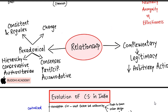Cabinet secretary को father of all IAS officers in the country कहते हैं, chief secretary father of all IAS officers in the state। यह hierarchy showcase करती है कि civil services को hierarchy follow करनी पड़ती है। अगर chief secretary कोई decision लेते हैं तो नीचे के IAS officers को follow करना पड़ेगा। इस तरह civil services एक authoritarian form में काम करती है।